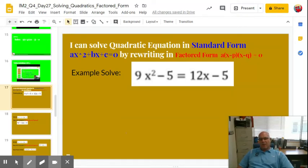Here's our next target. I can solve quadratic equations in standard form, ax² + bx + c = 0, by rewriting in factored form, a(x - p)(x - q) = 0. So here's our first example. Something should stick out like a sore thumb right now. Is that in standard form?